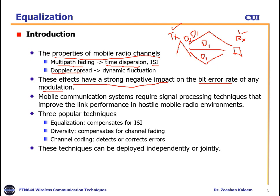Mobile communication systems require signal processing techniques to improve link performance in a hostile mobile radio environment. There are three popular techniques used to overcome inter-symbol interference, which is the major limiting factor. The first is equalization, which compensates for ISI. The second is diversity, which uses multiple paths to send the same data and improves the chance of reception. The third is channel coding, which detects or corrects errors.